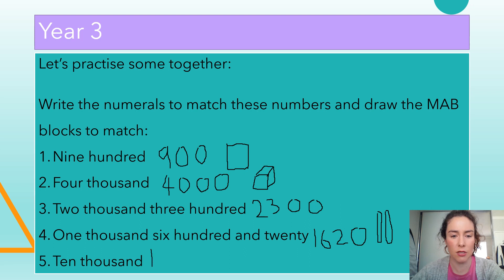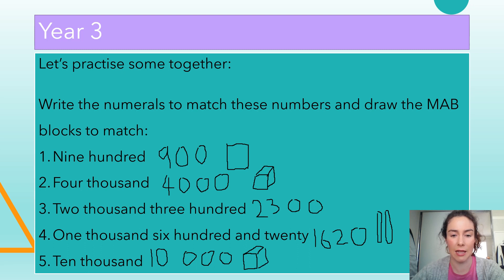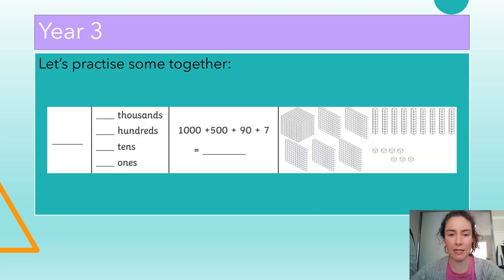Ten thousand is our last one. I'm going to write ten thousand, and you'll notice I left a gap between the ten and the thousand — in Australia we leave a gap for our numbers, we don't use a comma. To draw this one, you would have to draw ten cubes to represent ten thousand.